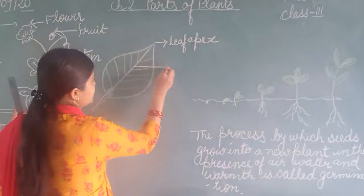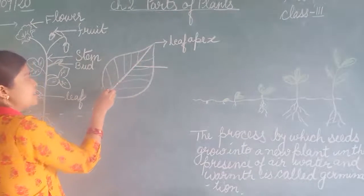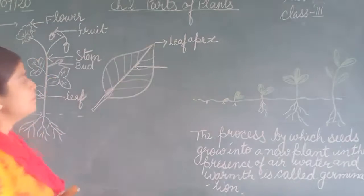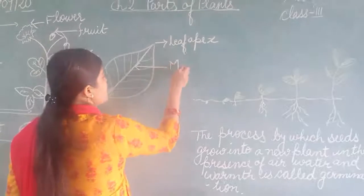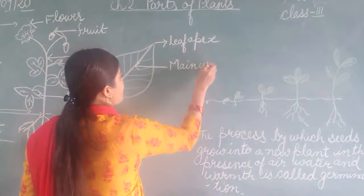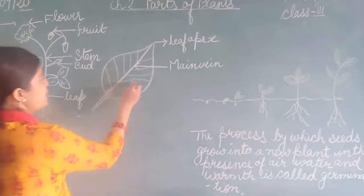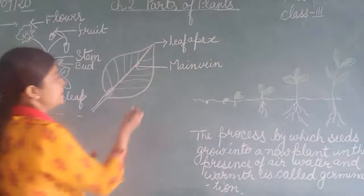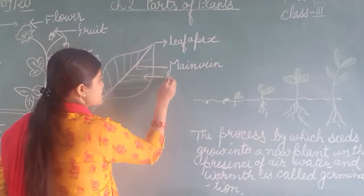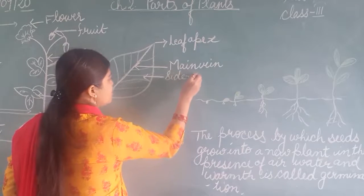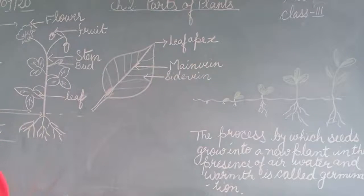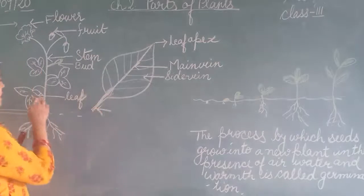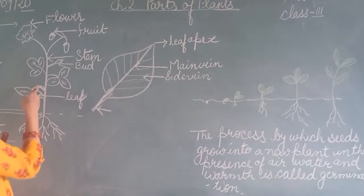You can see the center vein running through the center of the leaf — this is known as the main vein. Then you will see that side veins are also running from the main vein. This part of the leaf, through which it is attached to the stem, is known as the petiole or stalk.